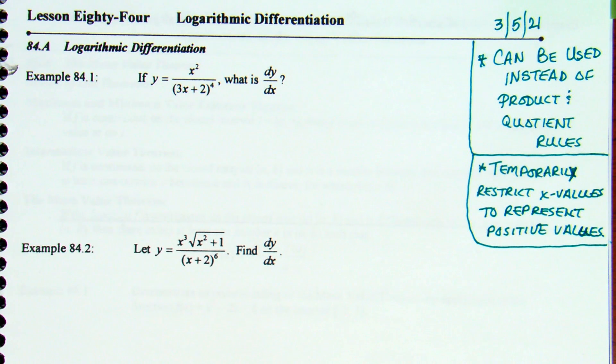Example one: y equals x squared over (3x + 2) raised to the fourth. They want to know the derivative. We could do the derivative using the quotient rule, but that denominator would involve a power rule and a chain rule, and that's where it gets a little difficult.